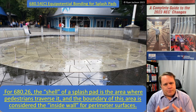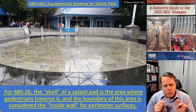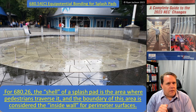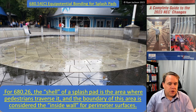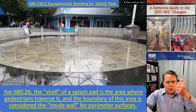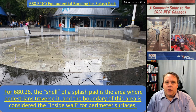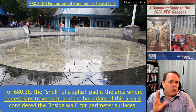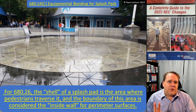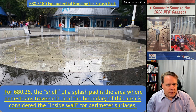So in the 2020 code we finally recognize splash pads. We classify them as fountains, and by definition they are — they shoot water up into the air. So what are the requirements when it comes to bonding around a fountain?